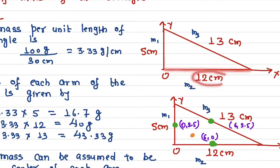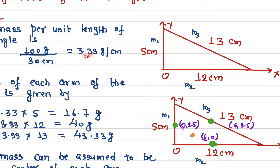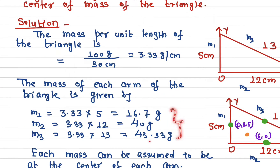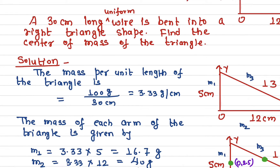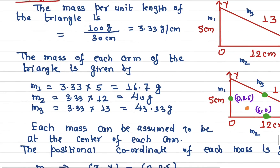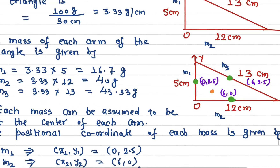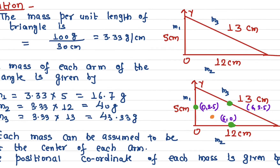The mass of the next side is simply equal to its length times the mass per unit length, which gives 40 grams. Multiplying the remaining length by 3.33 grams per centimeter gives the mass of that side. Adding all the masses together gives 100 grams total, which is correct.